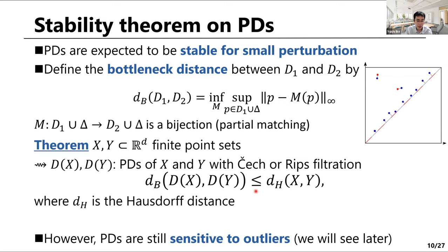However, if we change a single point in X to another, the Hausdorff distance can easily get large. Indeed, we will see later that persistent diagrams are still sensitive to outliers, and that would be a problem in practical use.